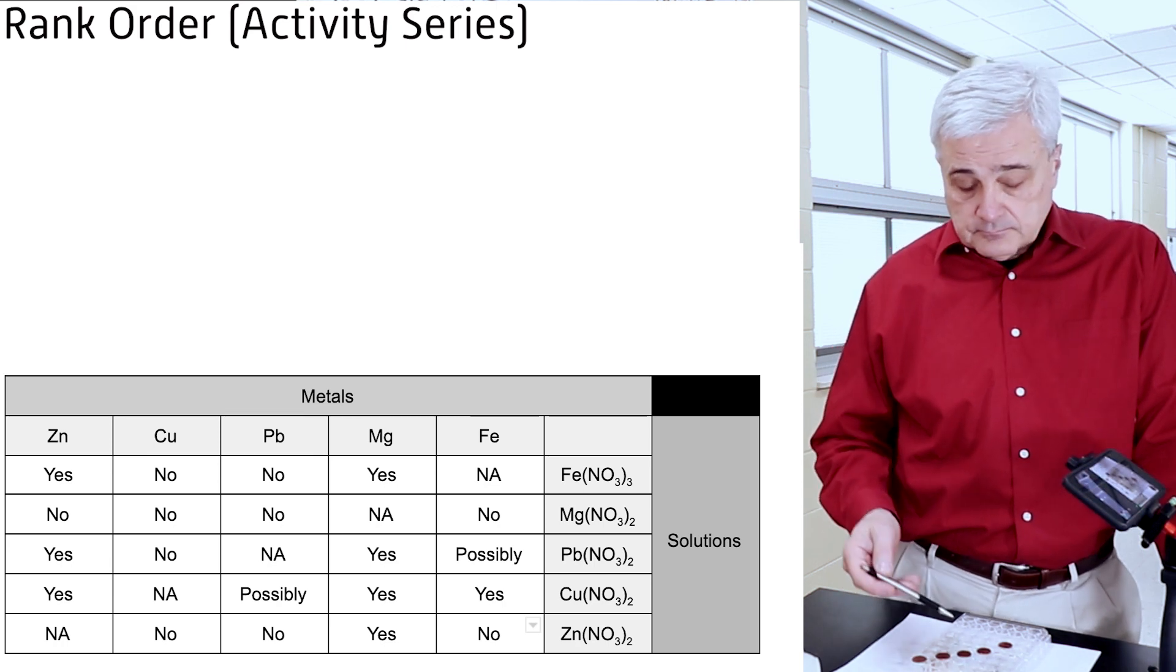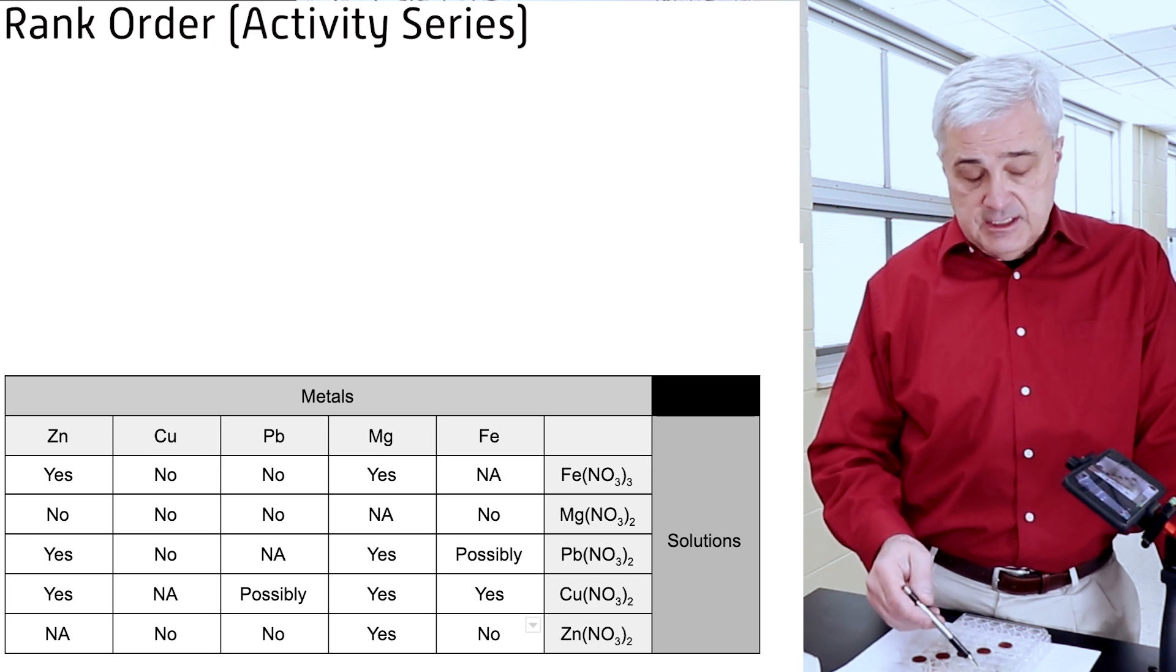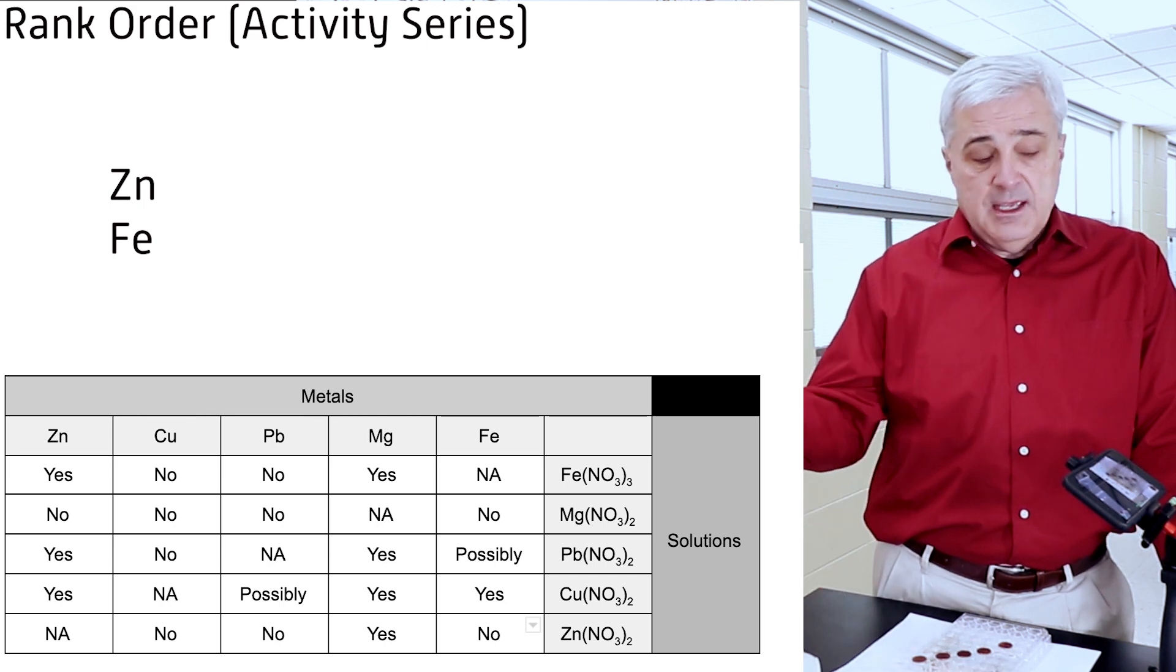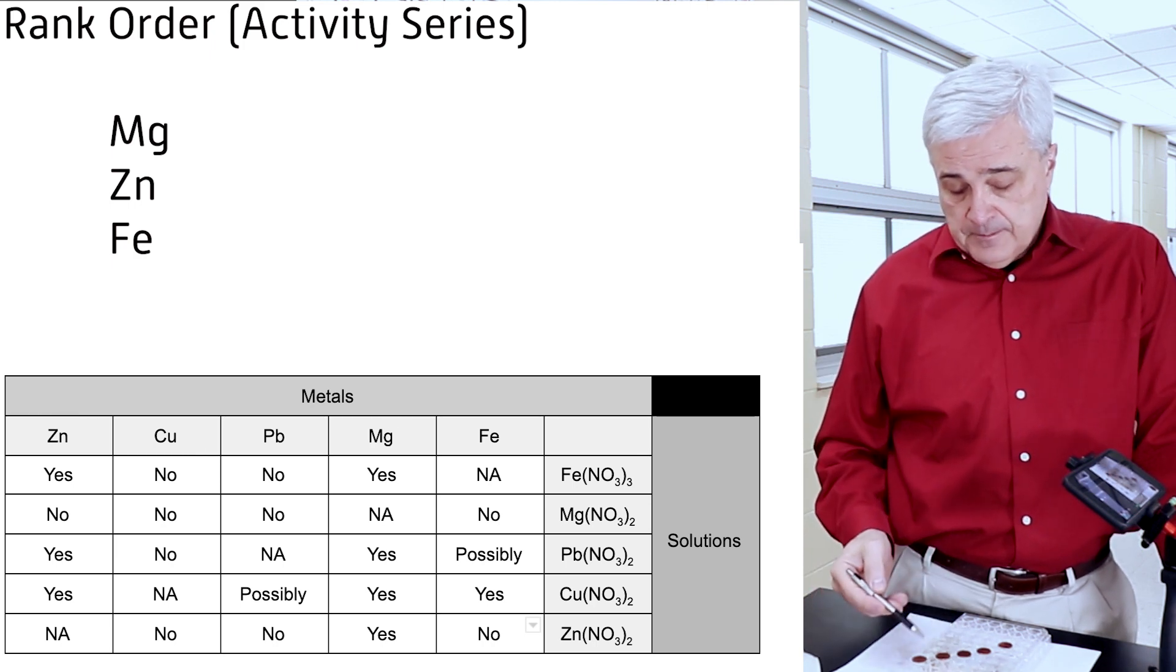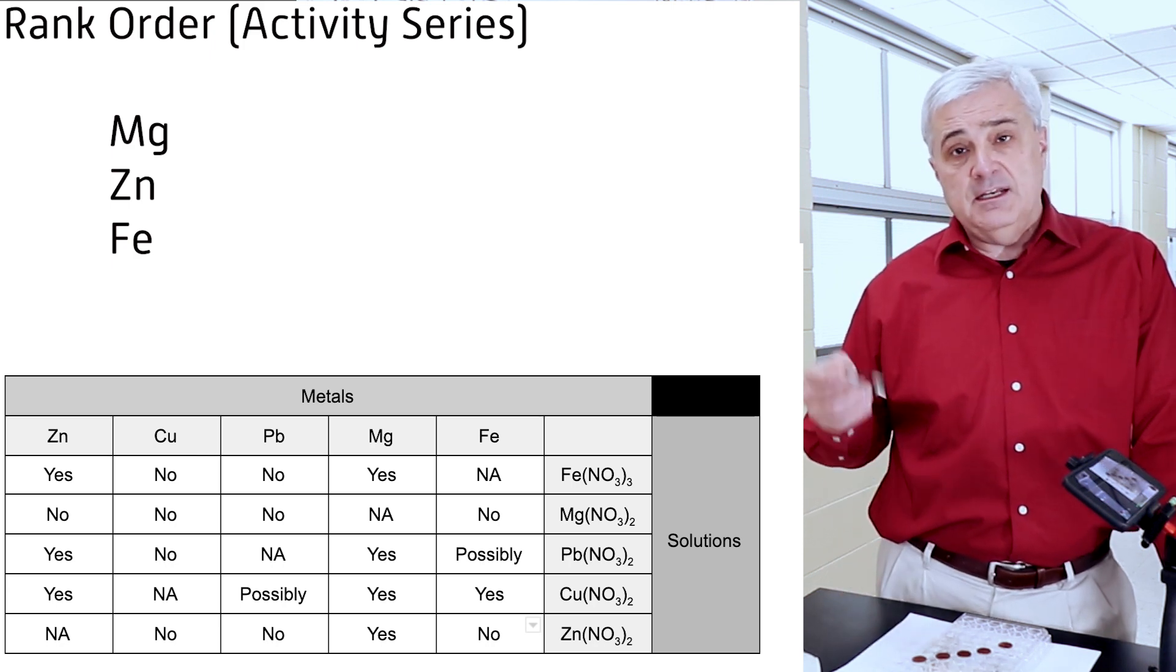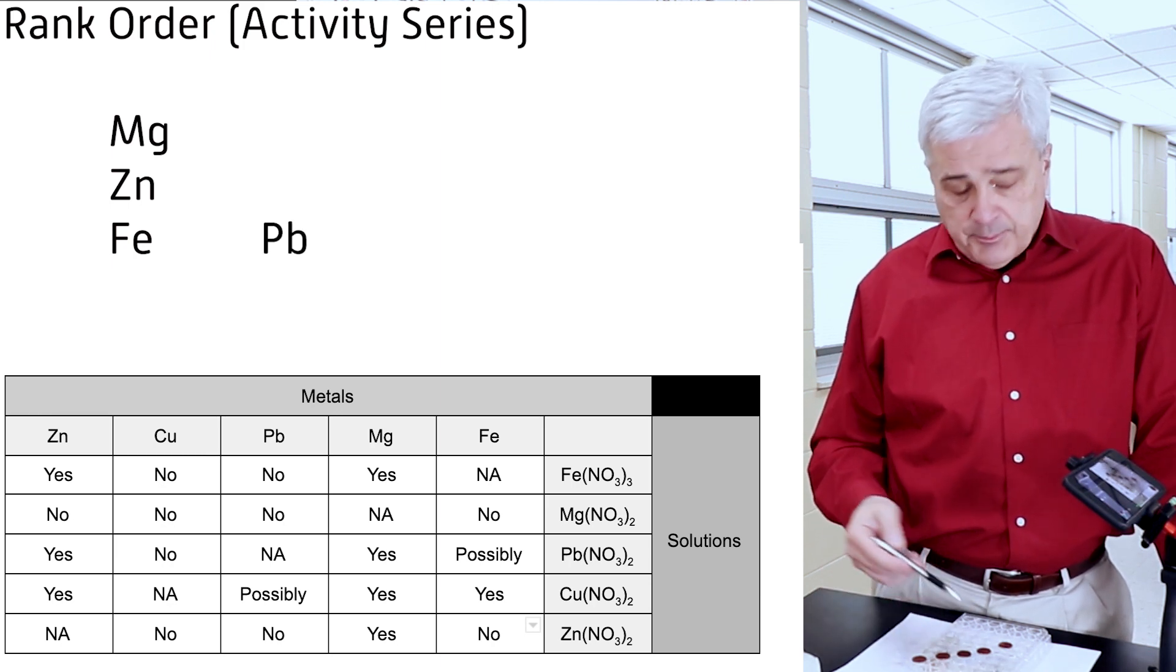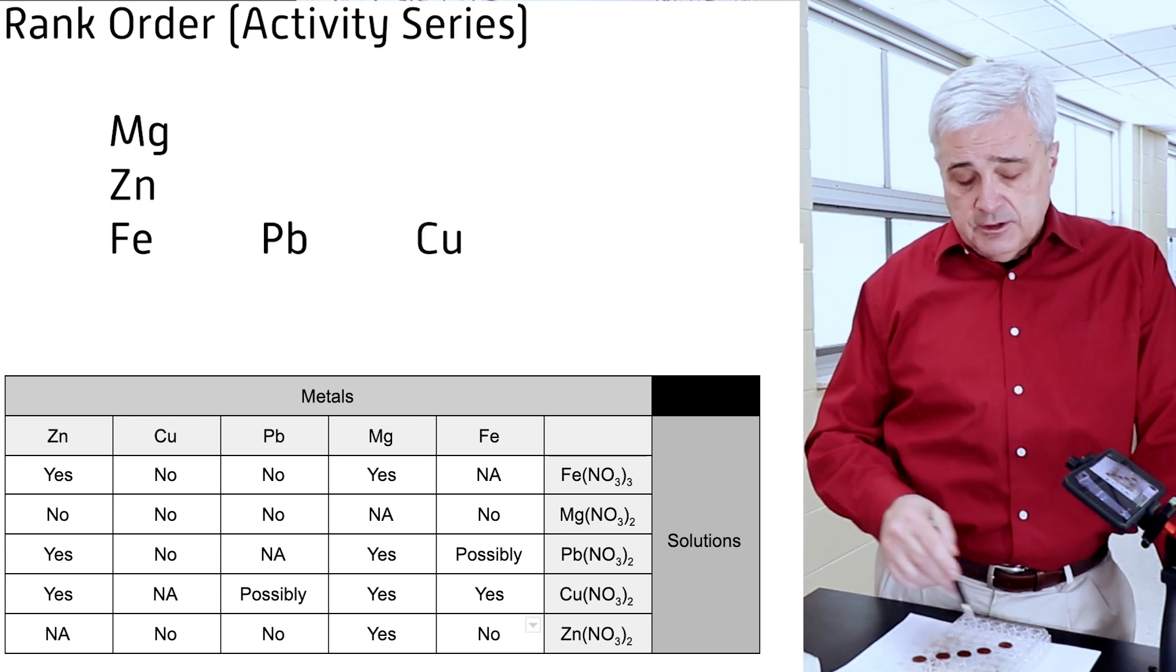So we want to look first at the zinc. Did the zinc react more than the iron? And the answer there is yes, it did. So zinc is going to be higher up than iron. Iron is going to come below zinc. Did zinc react with the magnesium? We said no. We said there was no reaction. So magnesium is going to be above zinc. Is zinc and lead? We said that zinc did react, take the place of lead. So zinc is more reactive than lead. Zinc and copper, yes. So copper goes down and zinc is above copper.